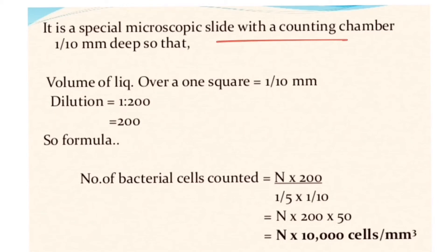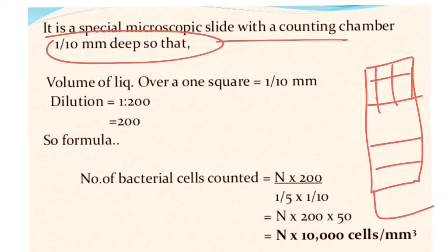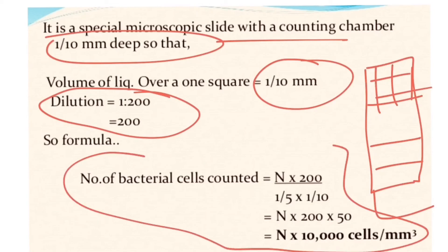This is a special microscope called the phase contrast microscope. The counting chamber is one by ten millimeter deep. It has a slide-like structure with five structures and sixteen parts. Dilution we have is 1:200. The formula is: number of cells multiplied by 200, multiplied by 1/5, divided by 1/10. You can count in particular millimeter square the number of bacterial cells. This is a special type of formula which we determine number of cells.